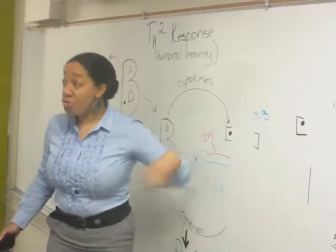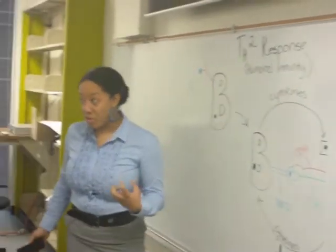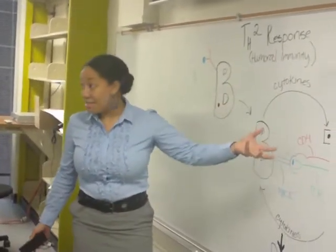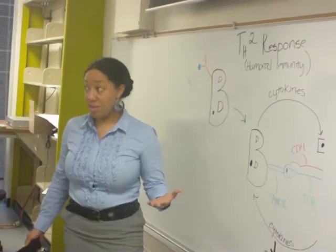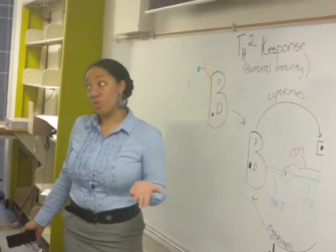So this is how overall HIV affects our immune system. By killing these helper T cells, it really affects our specific immunity. And basically, we're screwed.